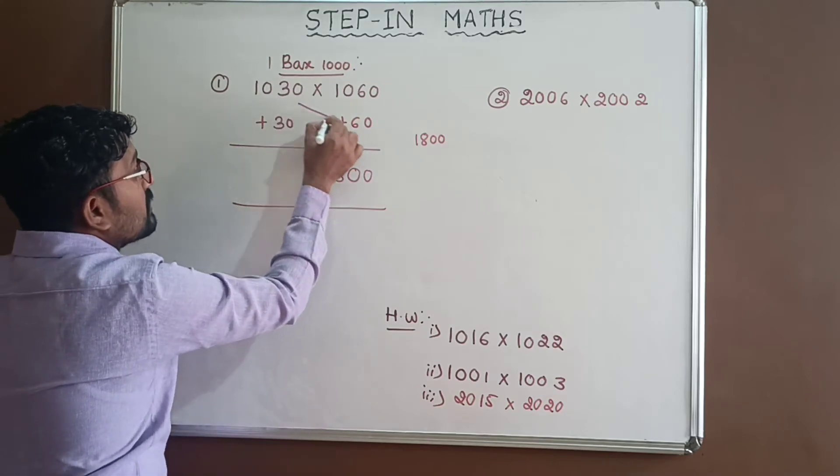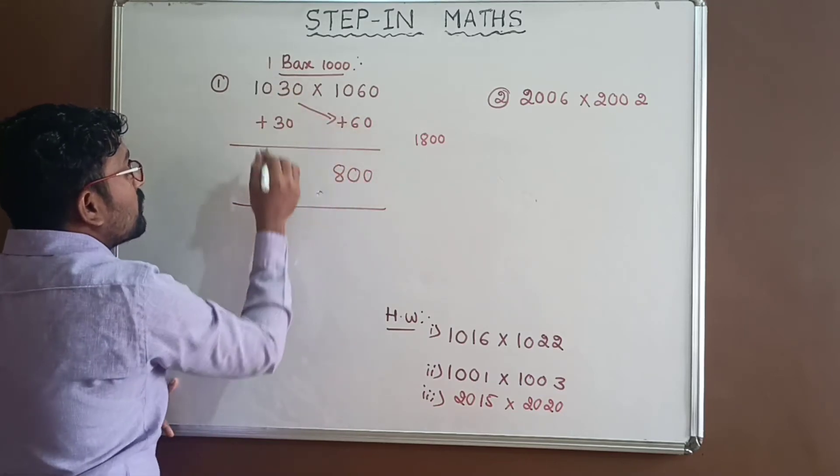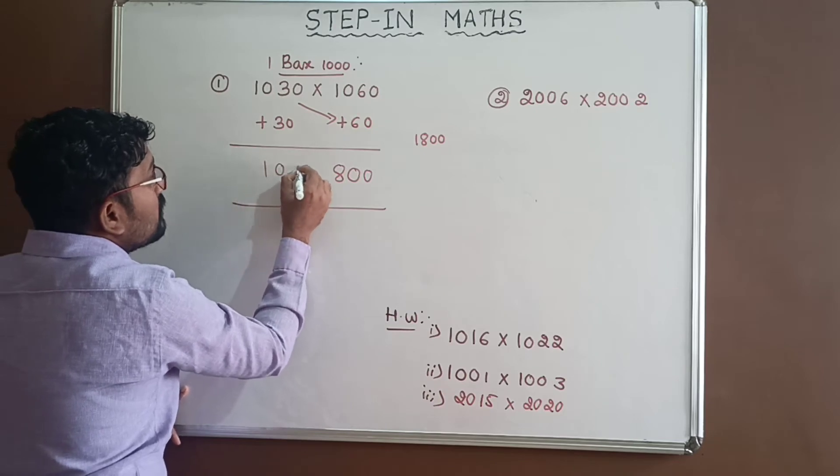1030 plus 60 is equal to 1090, plus 1 is equal to 1091.